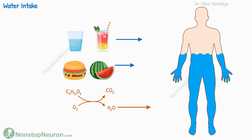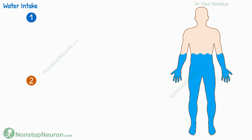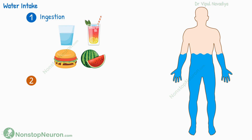First, let's talk about the intake. There are two main sources from where the body gets water. One is ingestion as liquids like water, juice, soft drinks, etc., and water present in food.